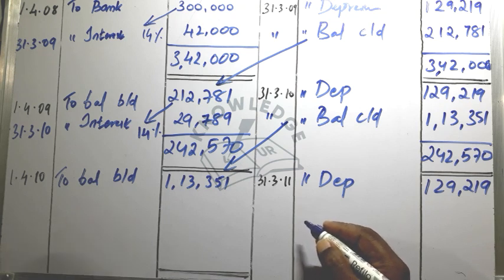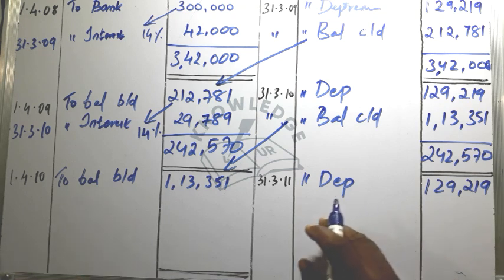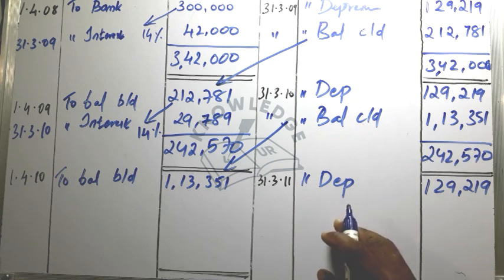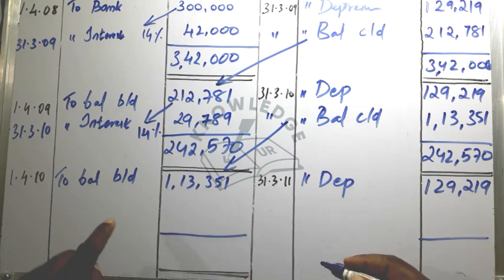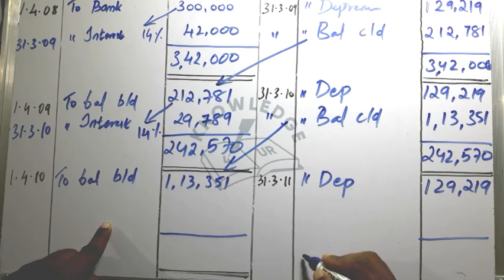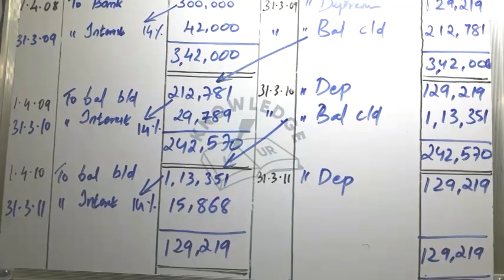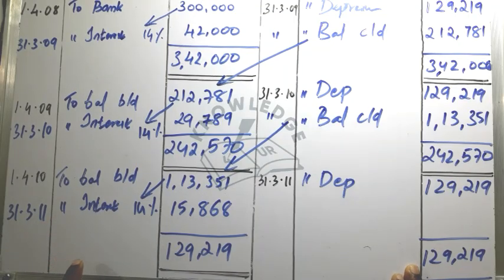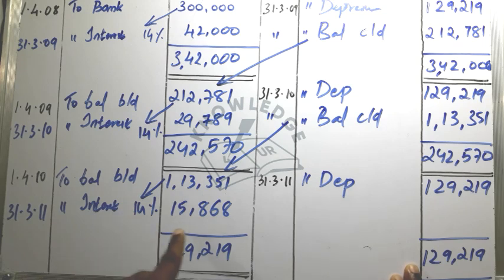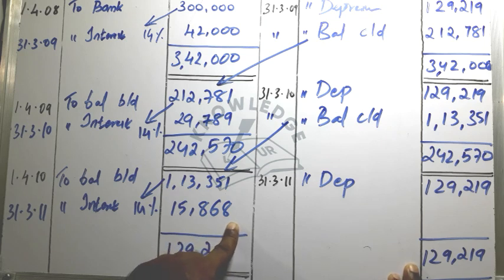The same amount of depreciation is provided each year because decimals could start rounding the amount to an approximate figure. Interest data confirms this. This is the annuity method to provide depreciation.